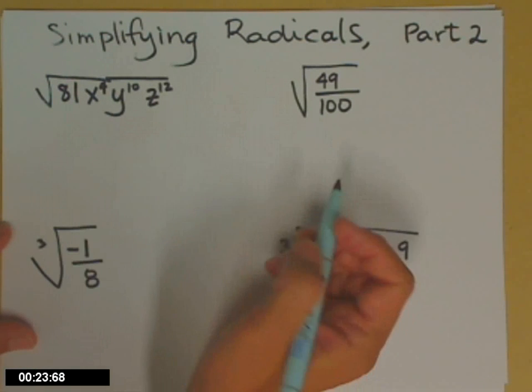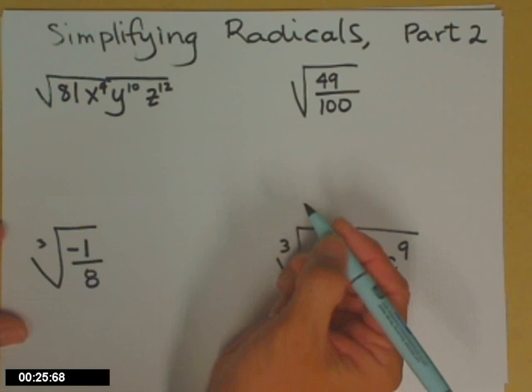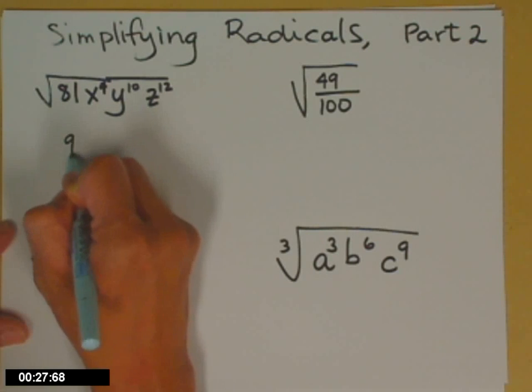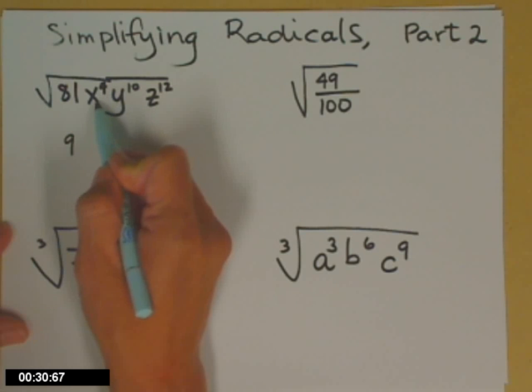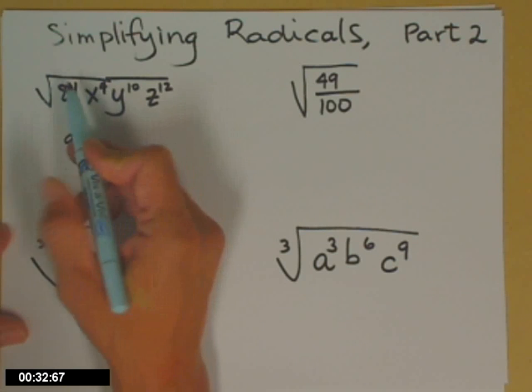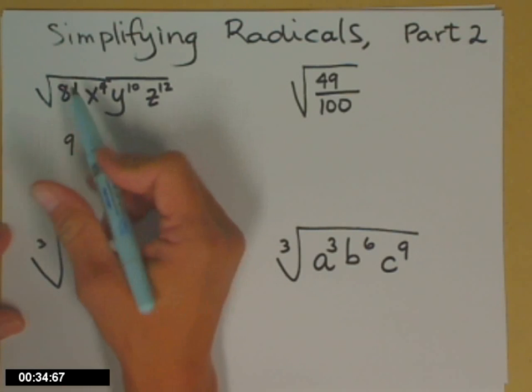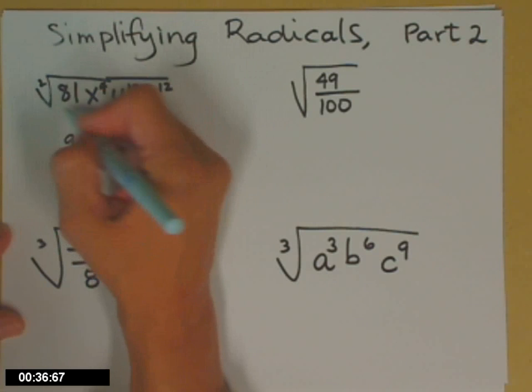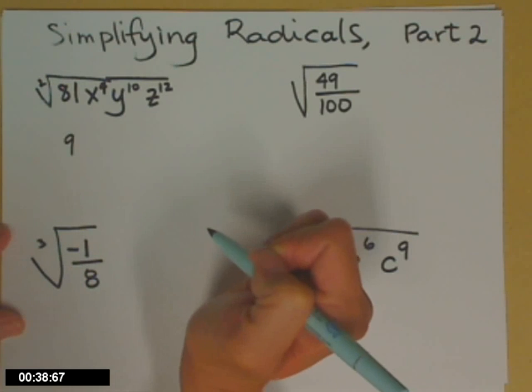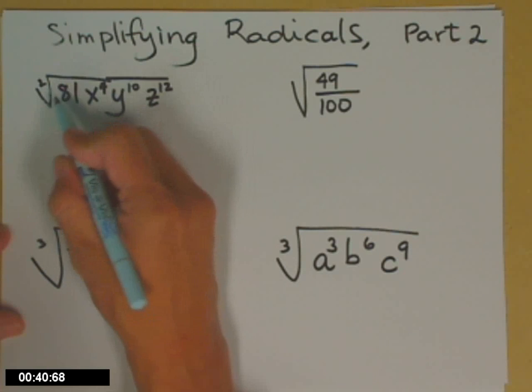With numbers, you just have to think what times what equals 81, and so that one is a 9. When we have a variable factor, such as this x to the fourth, the way I figure out how it simplifies is I take that index and I divide it into the exponent. So it will be x to the four over two. I'll go ahead and write that once and then you'll see what happens.